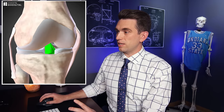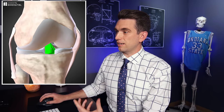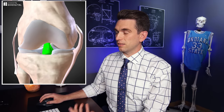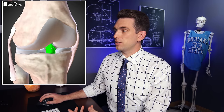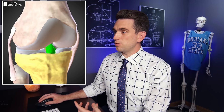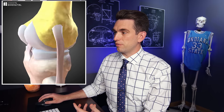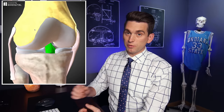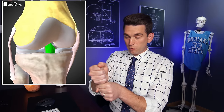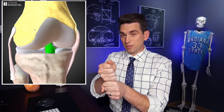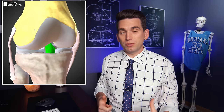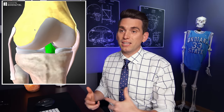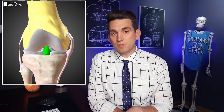Looking at our biodigital anatomy tool here, the ACL is highlighted in green. It's a ligament that sits on the inside portion of the knee and runs from the front of the tibia to the backside of the femur. It's primarily responsible for limiting the forward and backwards motion of the femur on the tibia, but also provides rotational stability and is particularly important with any sort of cutting and pivoting motion on the court.